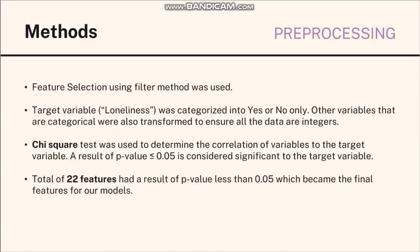Feature selection using filter method was used where features are selected based on a correlation to the target variable. For this, the target variable loneliness was categorized into yes or no only. Other categorical variables were also transformed to ensure all the data are integers. First, chi-square test was used to determine the correlation, and a total of 22 features are used as the final features for the models.